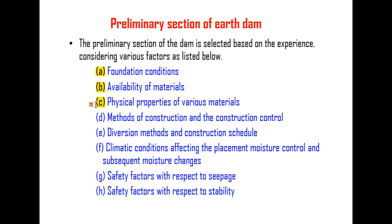Other factors include methods of construction and construction control, diversion methods and construction schedule. Also considered are climatic conditions affecting placement, moisture control and equipment, subsequent moisture changes, safety factors with respect to seepage, and safety factors with respect to stability. These are the various factors helpful in determining the preliminary sections of the earth dam.